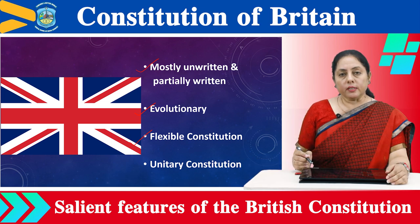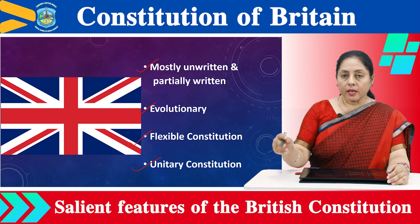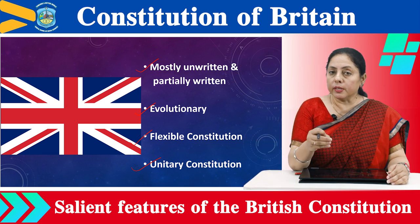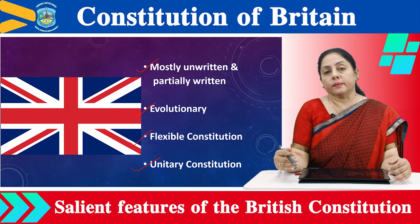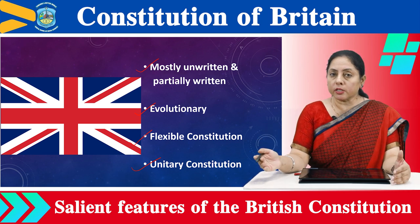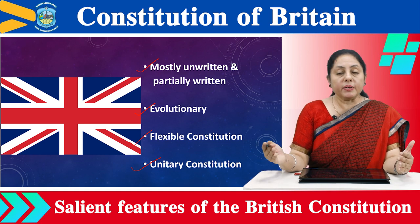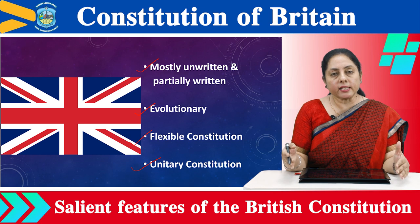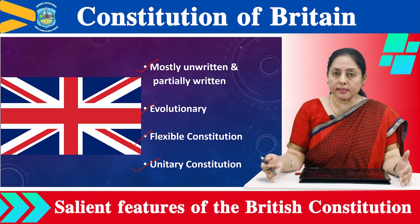The next feature is its unitary character. There are two different kinds of constitution: unitary or federal. If we talk about federal structures — India, US — the powers are divided among the centre, state, and local bodies. Especially in India, we have local bodies too, so there is a three-tier system.